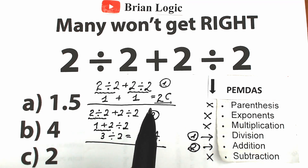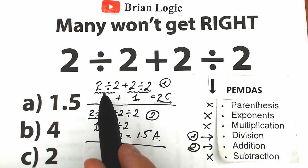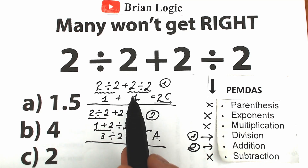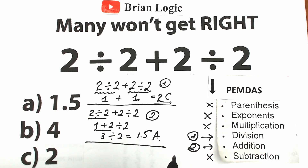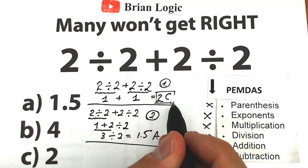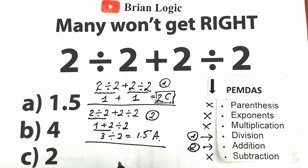Let's compare the two approaches: the correct sequence is division, then division, then addition. The first interpretation follows this exactly, so it is the correct answer. The correct answer is 2, not 1.5. I hope you understand this explanation and why 2 is right.